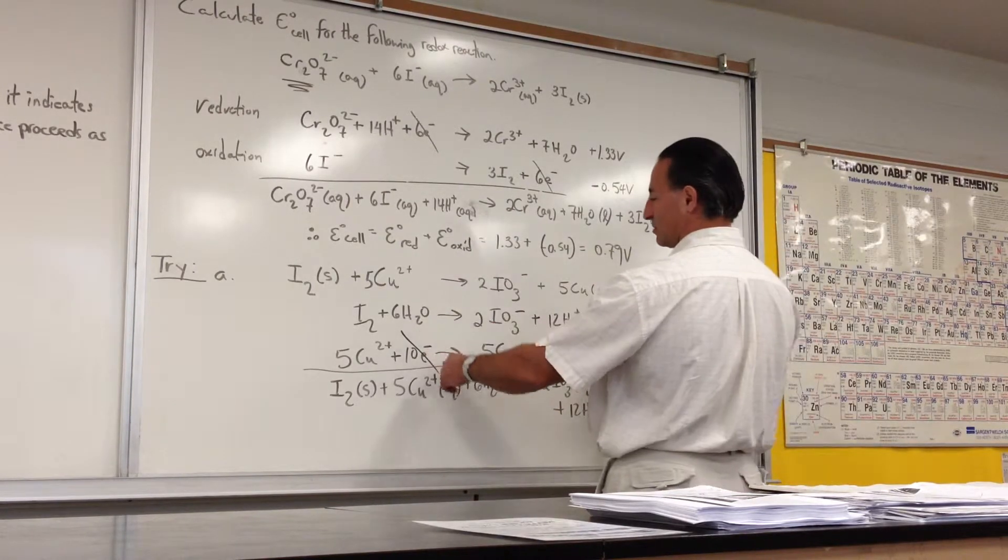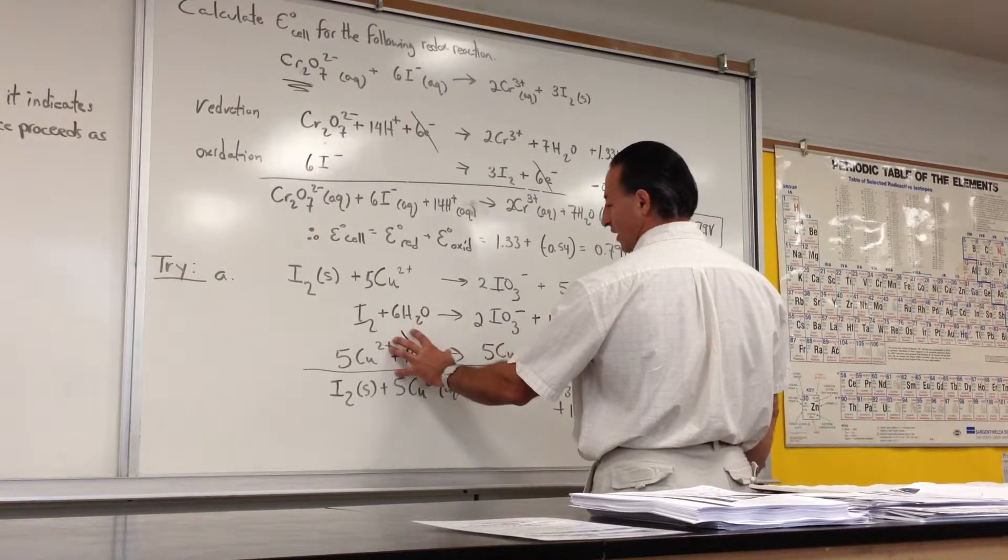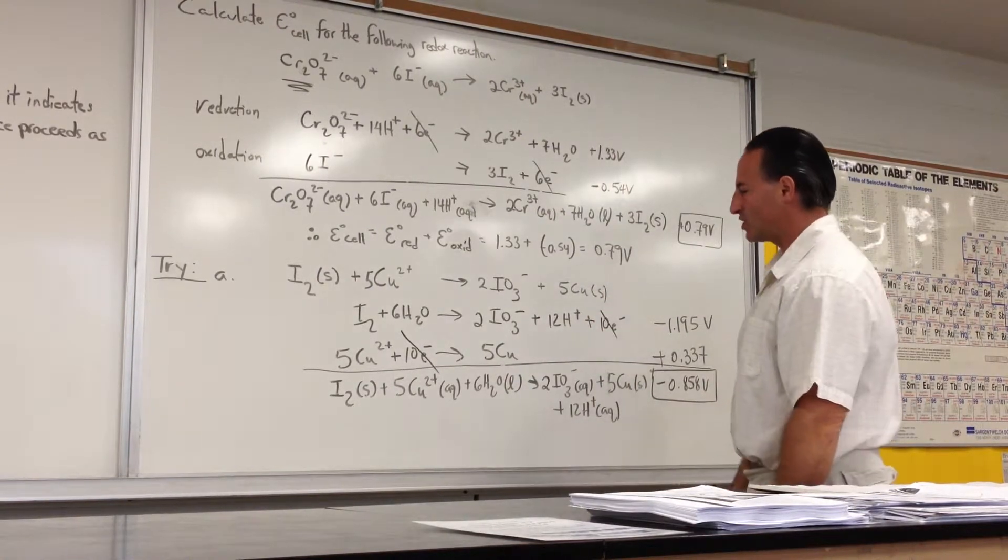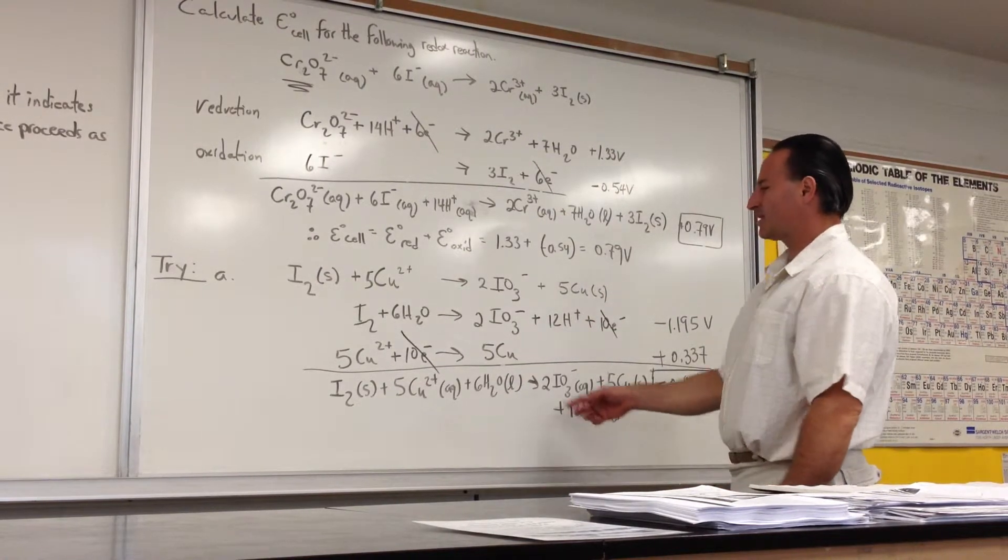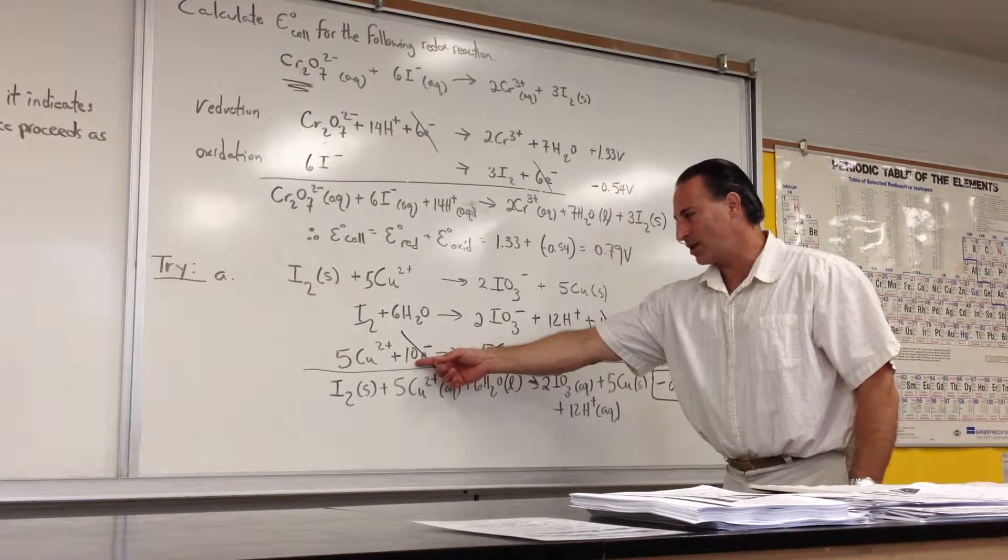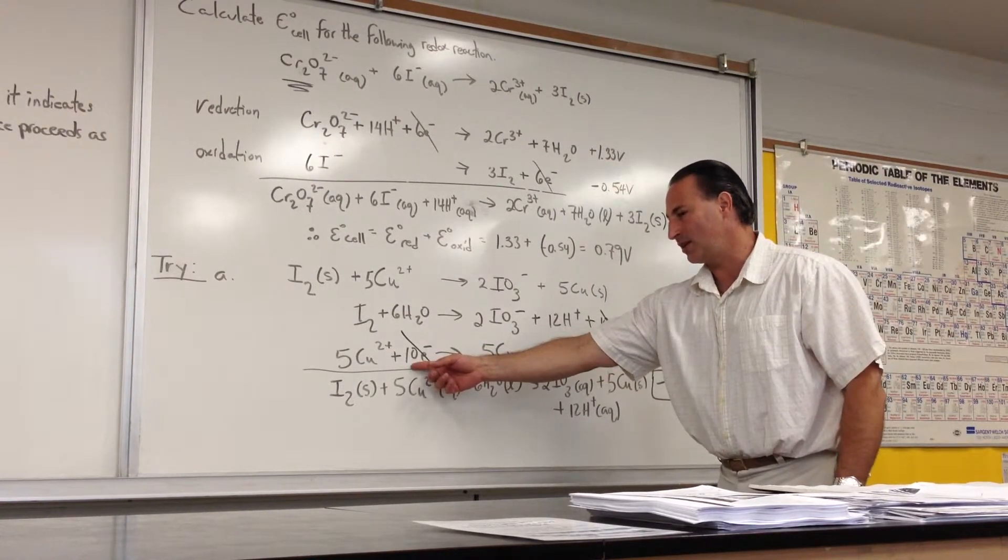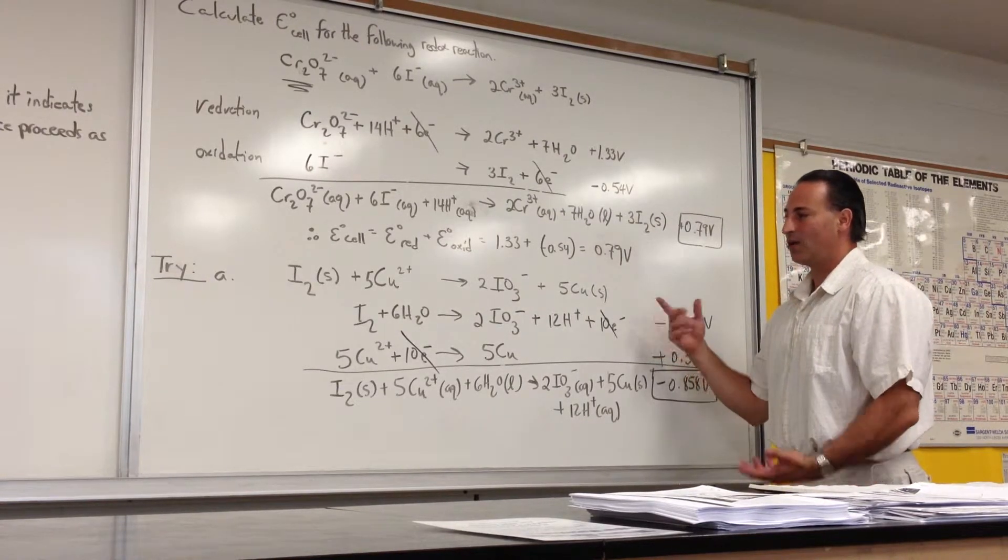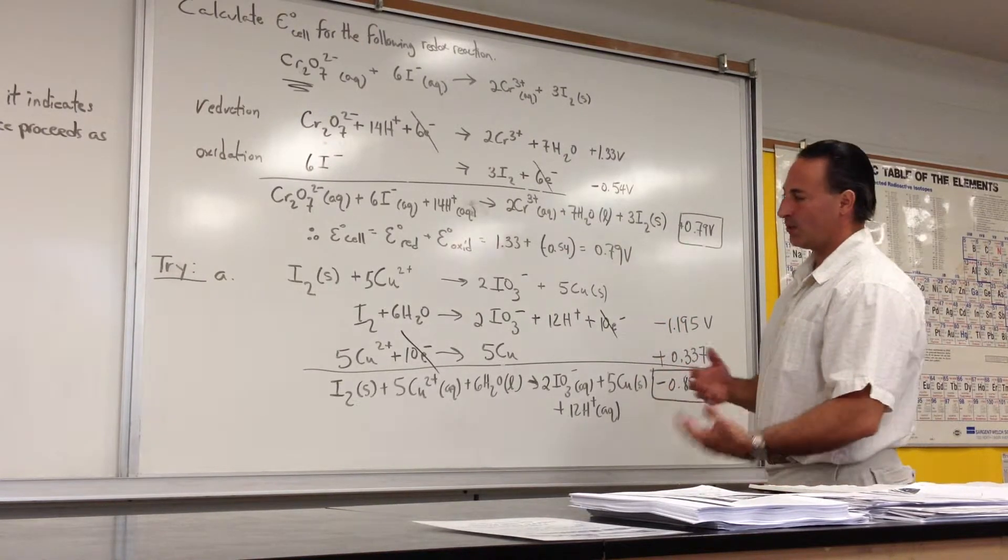Now that both half-reactions are balanced, because you have 10 electrons on the left here and 10 electrons on the right there. Remember, with redox reactions, one of the reactions has to be taking electrons, like this one. This is the reduction. It's taking electrons. And one of the reactions has to be an oxidation, giving up electrons. Otherwise, it won't work. One of the reactions is to give electrons, and the other reaction is to take the electrons.